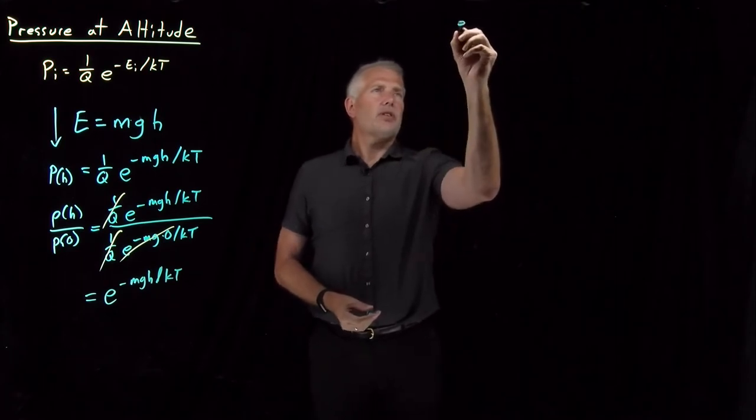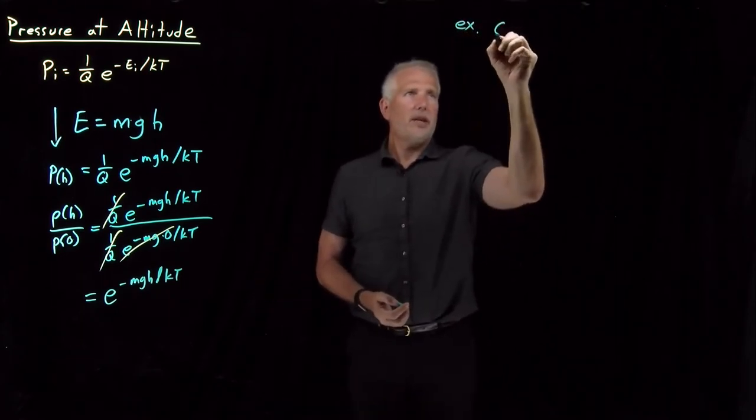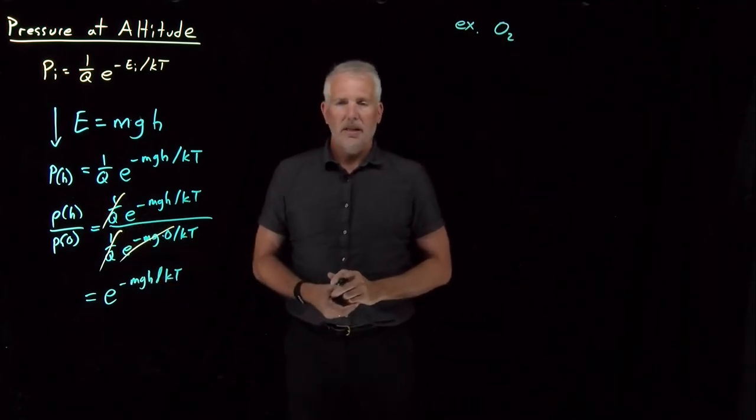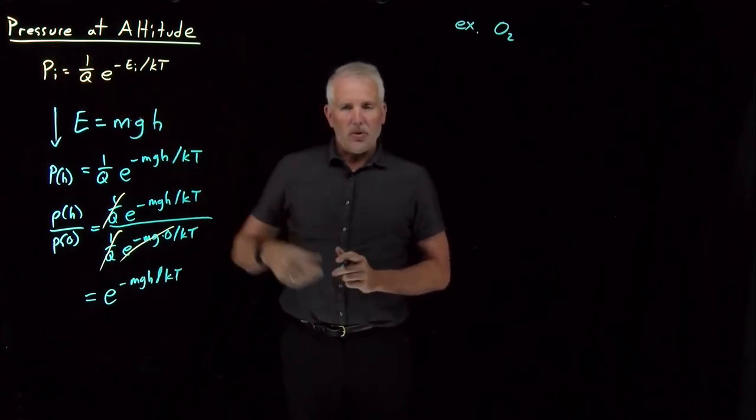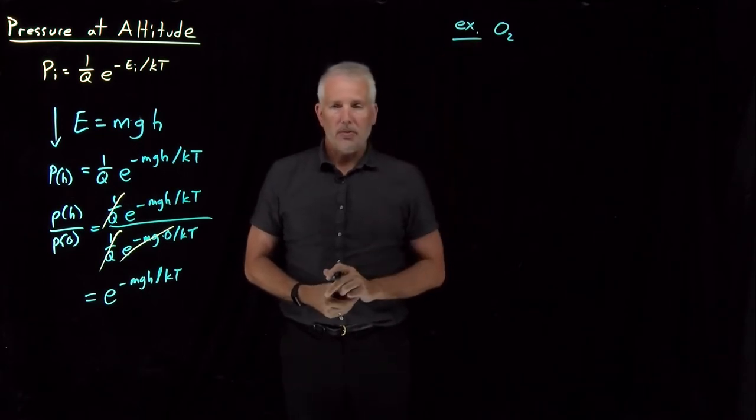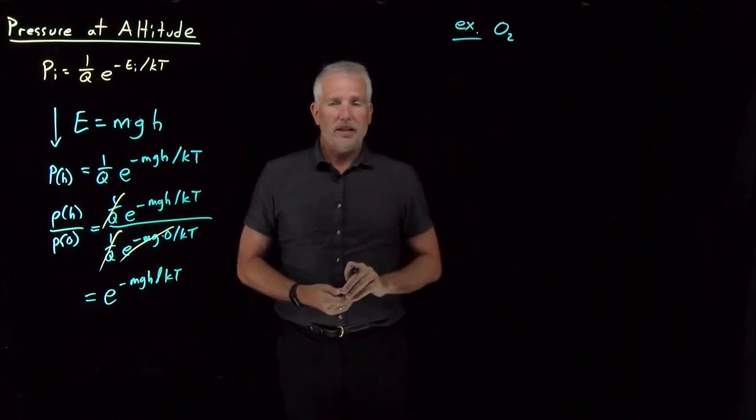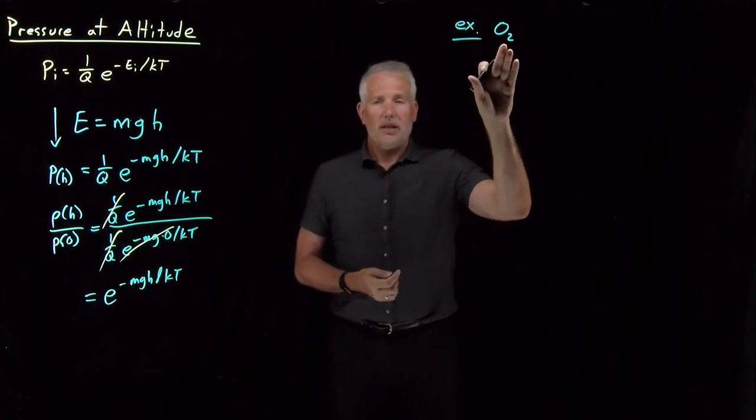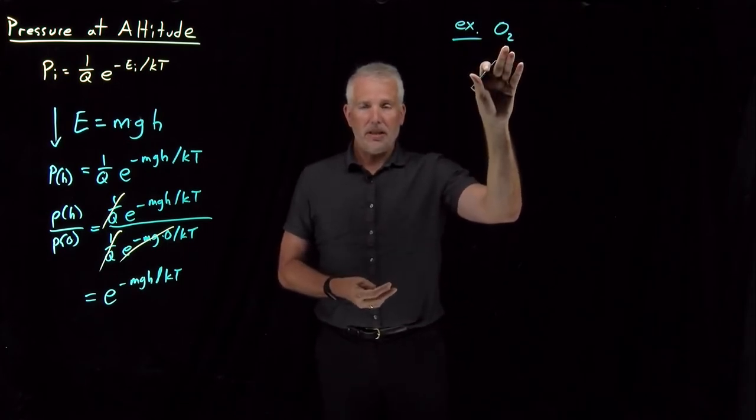This tells us the probability of being at height h relative to being at height zero. So let's see how that works with some actual numbers. Let's say the thing we're interested in being at some particular height is the air pressure or the pressure of a certain gas as we go up to altitude. So this question is motivated - I was hiking recently out west. If we calculate an example of how thin the air gets when you go to the top of a mountain, let's say oxygen as the gas I'm most interested in breathing.